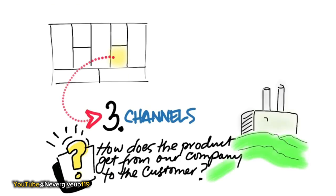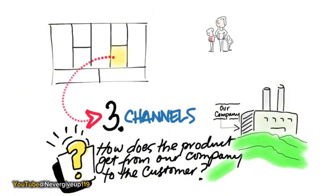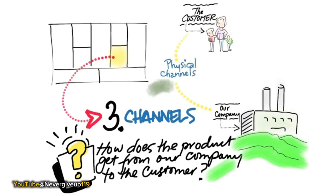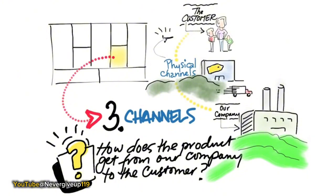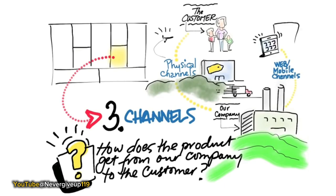When companies first started, they were essentially manufacturing concerns, and they hired agents — outsiders — to be their sales channel. The first types of companies made physical products and therefore had physical channels: salespeople, stores, etc. But with the emergence of the web, we now have web and mobile channels. So a key choice for us is picking the right distribution channel — physical versus web and mobile.